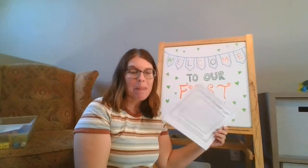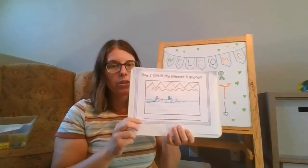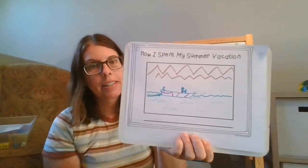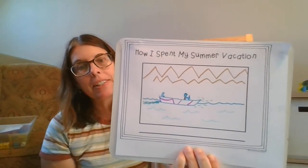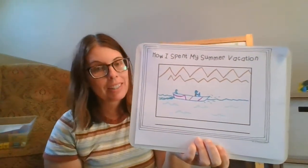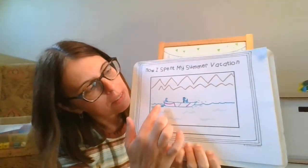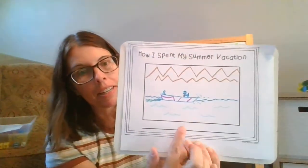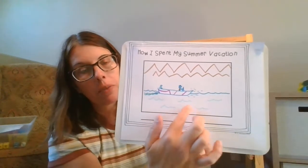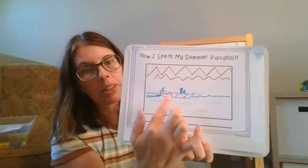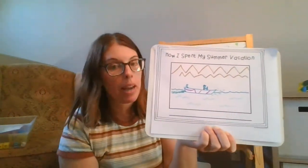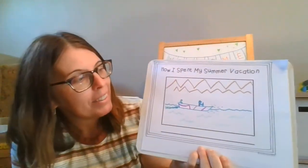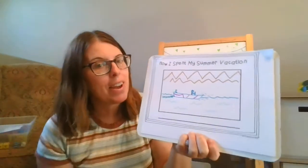Let me show you my example of what I did this summer. I chose this paper - 'How I Spent My Summer Vacation.' One of the things I did a lot was go on my boat. I drew a picture of my boat and tried to add as many details as I could: the waves in the water, the splashing water behind our boat, and the mountains because it's a really pretty area.